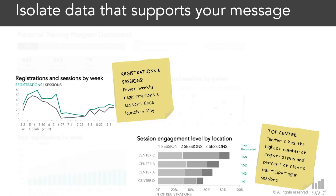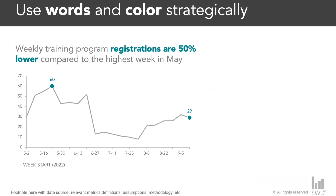When we're ready to start crafting our communication, we want to be thoughtful about using words and color strategically. Words and color are a powerful combination that allow us to highlight and emphasize key takeaways for our audience. Notice how, by taking the data out of the monitoring report, we can more easily get our audience to notice the most important information. We call attention to the lower number of weekly registrations by using color and data markers sparingly, and pair that with text at the top of the graph so it's obvious where they should look and what they should take away. We can also use words to explicitly recommend an action and make the so-what clear.